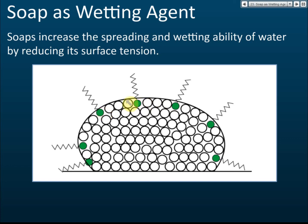When there are a lot of soap molecules remaining on the surface of the water, they can break the force between the water molecules. These two molecules have a very strong attraction force, but if we have a soap molecule between them, it can break that force. This reduces the force between the molecules, and as a result, it reduces the surface tension of the water. When the surface tension is reduced, the water can wet the surface of objects more easily — for example, the fabric of your clothes.